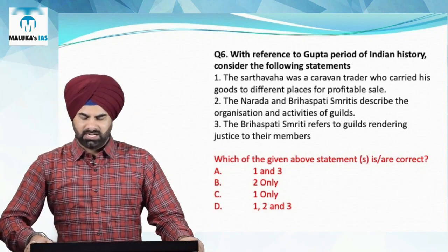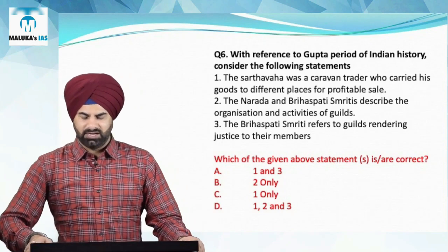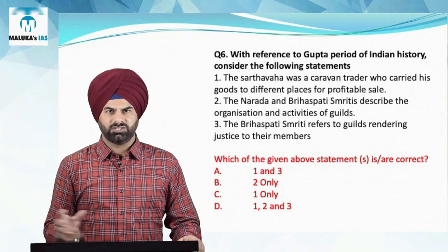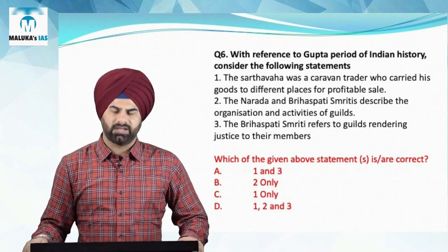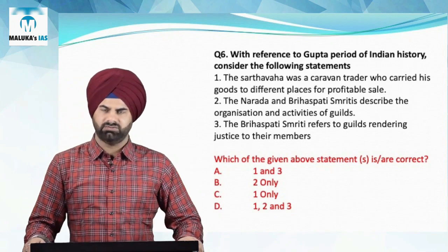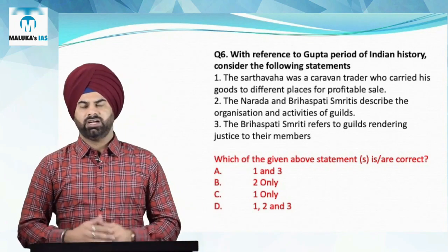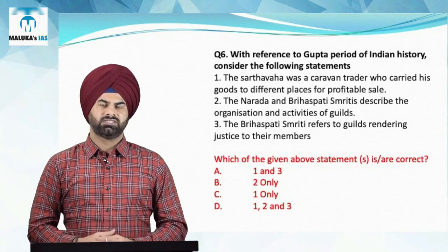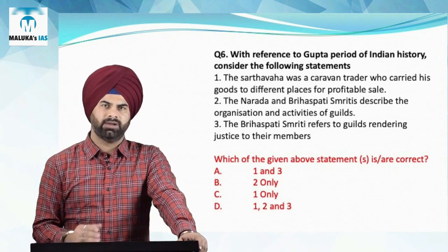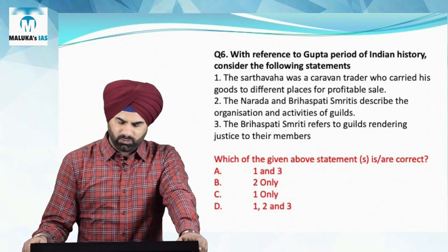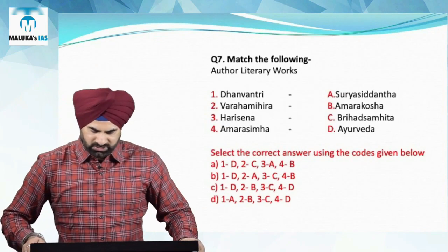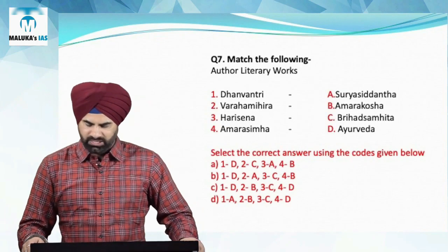The second statement — that Narada Smriti and Brahaspati Smriti describe the organization and activities of guilds — is correct. Both texts describe how guilds were organized and trading activities carried on. The third statement — that Brahaspati Smriti refers to guilds rendering justice to their members — is also correct. Guilds had power to maintain armies and punish erring members. Therefore for question number six, all three statements are right and B becomes the answer.